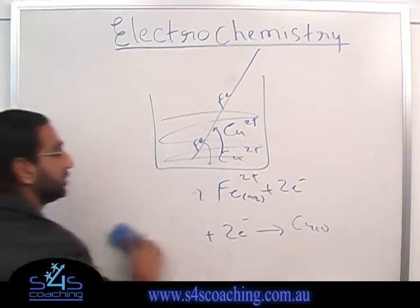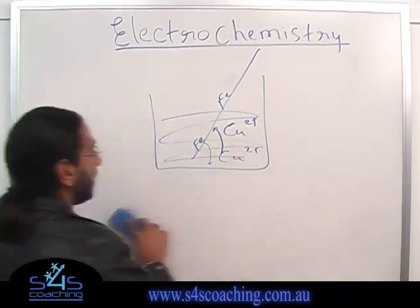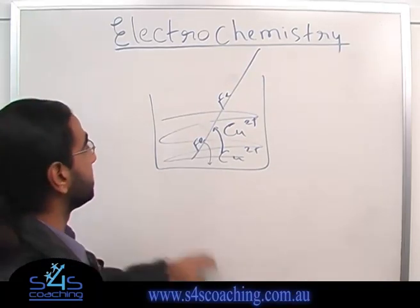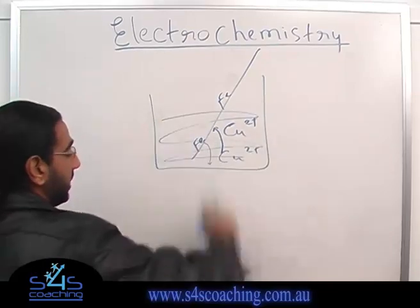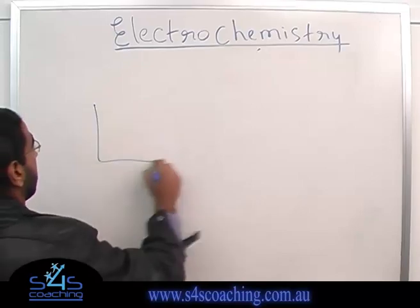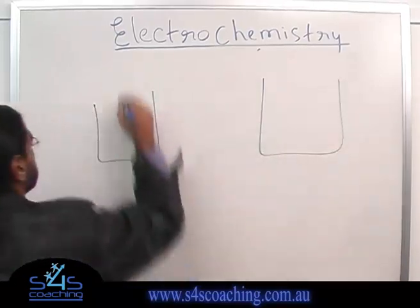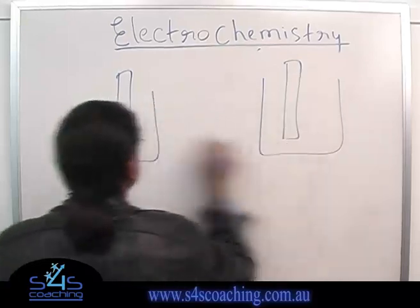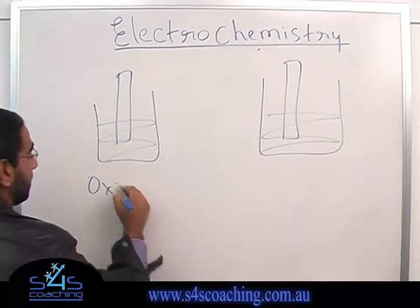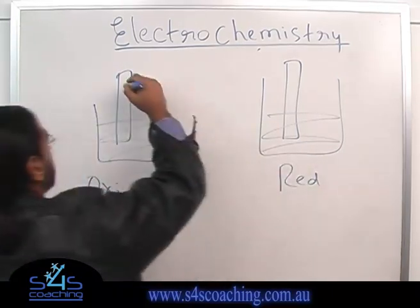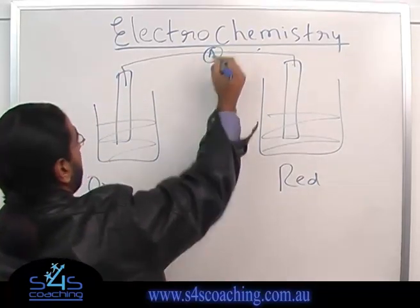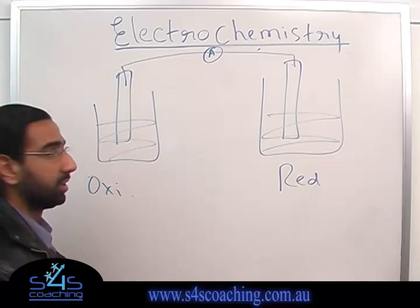Now, to make a galvanic cell we use exactly the same principle — something gives away electrons and something else takes the electrons. But the difference is, rather than having everything in one container, what we do is separate it. We'll have one cell where oxidation happens and another part where reduction happens. Electrons come out from the oxidation side and go to the reduction side. I'll put an ammeter there to measure the current, and I will also need a salt bridge.